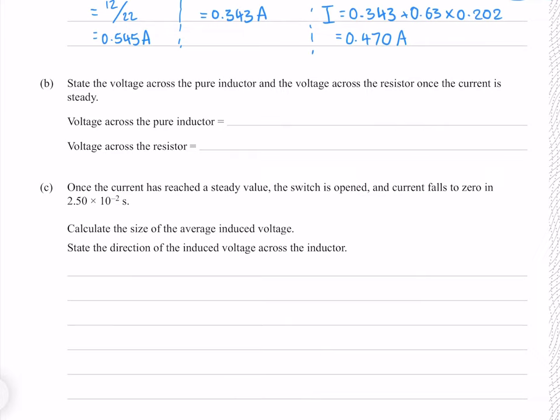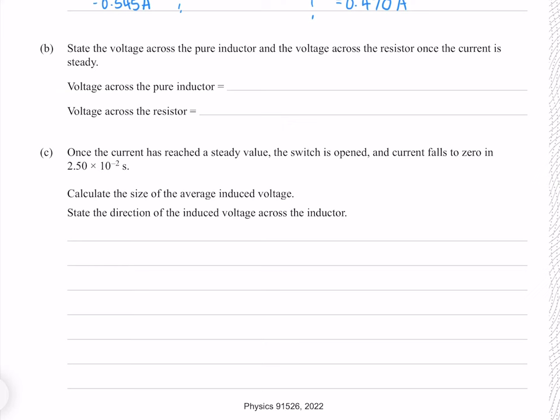State the voltage across the pure inductor and the voltage across the resistor once the current is steady. When the current is at a steady value, the back EMF the inductor produces is proportional to the change in current. Because it's not changing, there is no back EMF and therefore no voltage across the inductor. That means the entire 12 volts must be across the resistor.